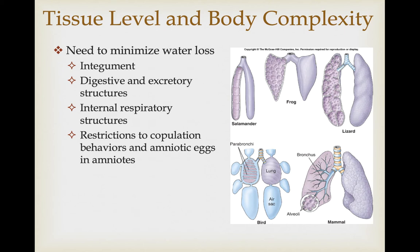The terrestrial environment is also typically dry, so organisms tend to evolve structures to minimize water loss — integumental structures that prevent evaporation, digestive and excretory structures that use a minimum amount of water. Internalizing your respiratory structures instead of having gills is also necessary, as gills would dry out too quickly. So you have to internalize your respiratory structures into lungs. Most tetrapods adapted to the terrestrial environment are restricted to copulation with internal fertilization, and the use of an amniotic egg that doesn't require water to develop is really important in the amniotes.